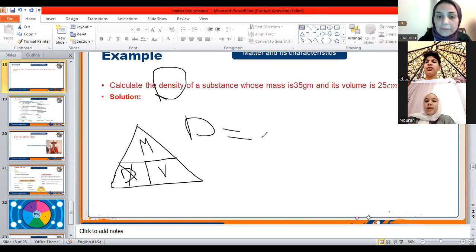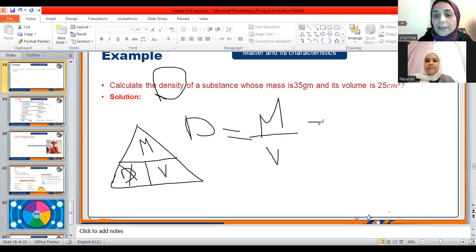Density equals mass over volume. Can you calculate it? Mass equals and volume equals. Uh, calculated now? Yes, 35 gram, yes, 35 over 25 centimeter.